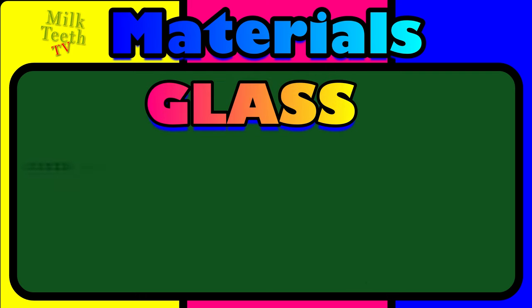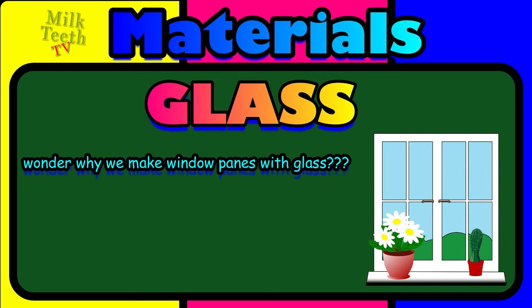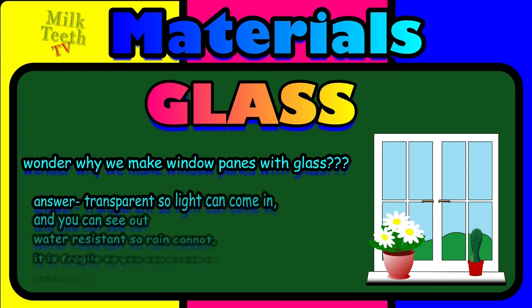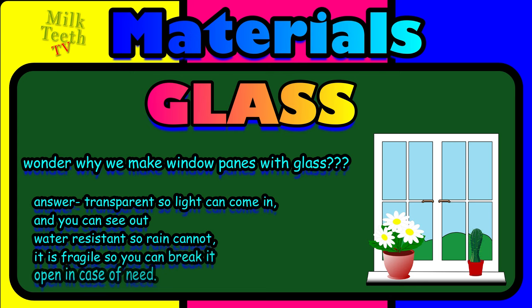Did you ever wonder why we make window panes with glass? Well, the obvious answer is because glass is transparent, so light can easily come in and you can see outside. It is water resistant so rain will not come in, and it is fragile enough so that you can break it in case of an emergency. That is why we use glass in our window panes.